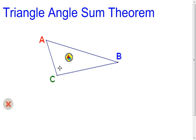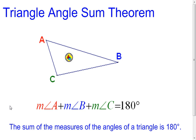If you move the triangle so the measures change, that sum of those three angles is still going to equal 180 degrees. This is the triangle angle sum theorem: take the three angle measures, add them together, and it will always equal 180 degrees.